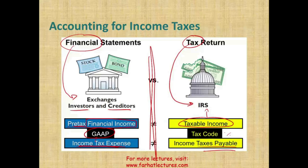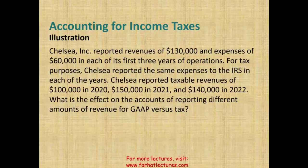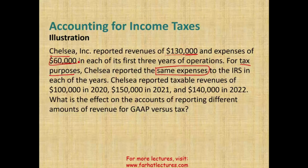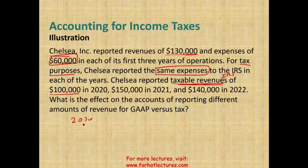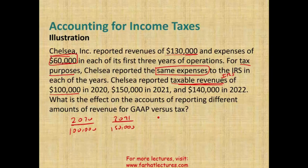To illustrate these concepts, let's work through an example. Chelsea reported revenue of $130,000 and expenses of $60,000 in each of the first three years of operation. For tax purposes, Chelsea reported the same expenses of $60,000. Chelsea reported taxable revenue of $100,000 in 2020, $150,000 in 2021, and $140,000 in 2022 — all for IRS tax purposes.